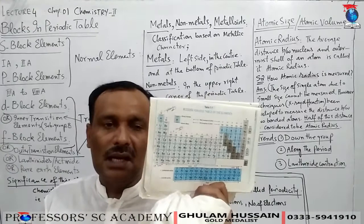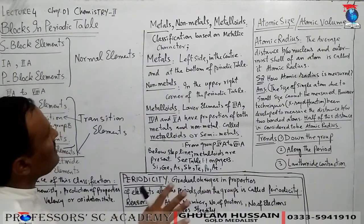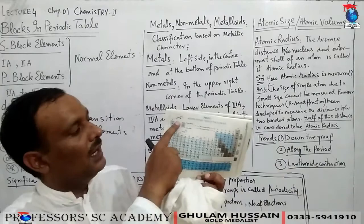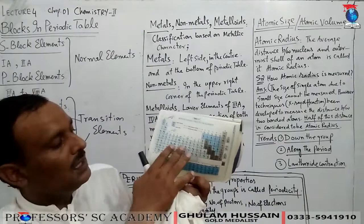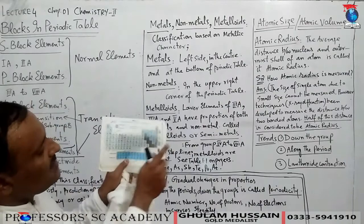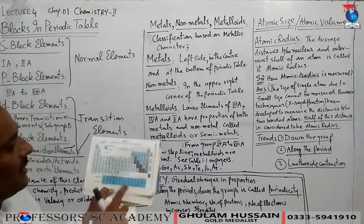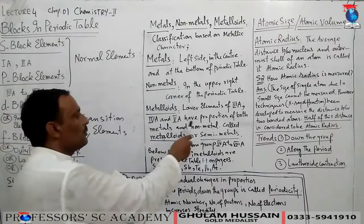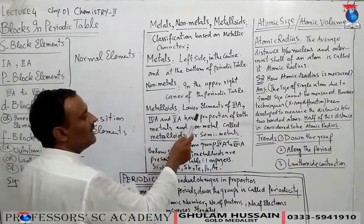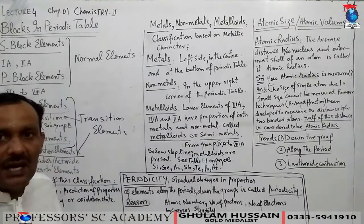Metals are present on the left side, in the center, and at the bottom of the periodic table. All metals are on the left side — except hydrogen — in the center and at the bottom. Non-metals are present in the upper right corner of the periodic table. Metalloids are the lower elements of groups 3A, 4A, and 5A which have properties of both metals and non-metals and are called metalloids or semi-metals.